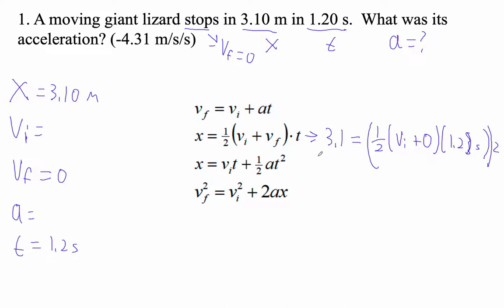So 2 times both sides. So this times 2 is 2 times 3.1 is 6.2 is equal to, and now the one half and the 2 go away. Equals Vi plus 0 times 1.2. Notice that Vi plus 0 is just Vi.